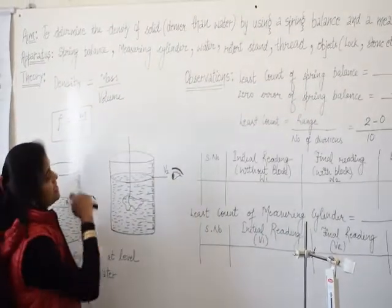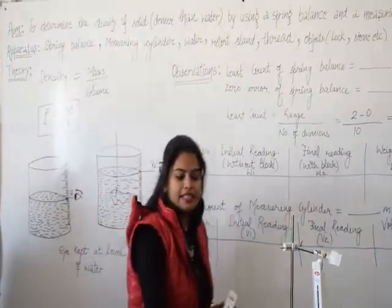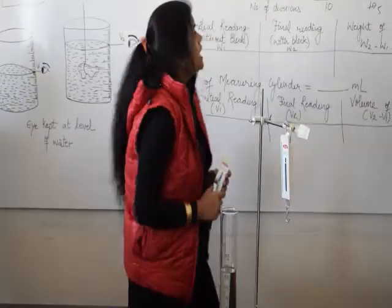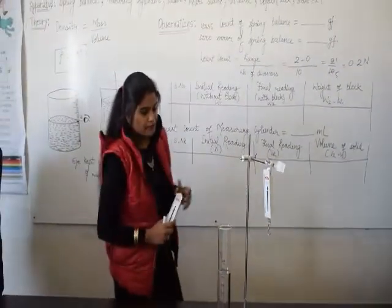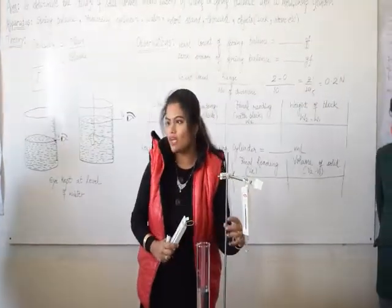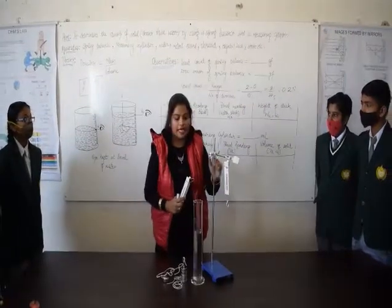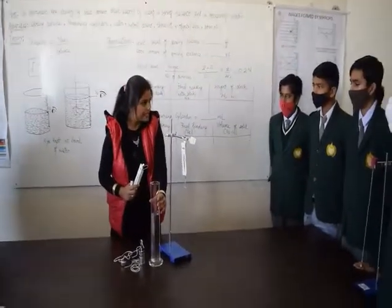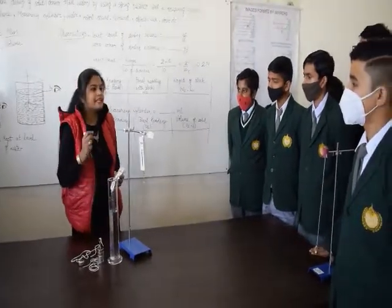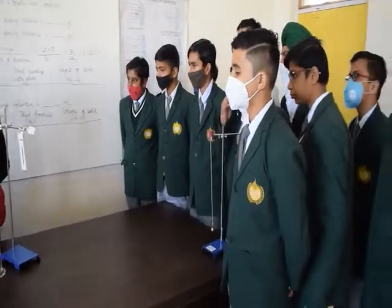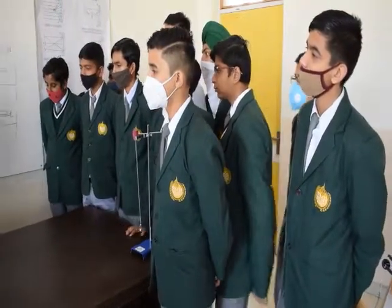We have to take a solid which is denser than water by using a spring balance and this measuring cylinder. What are the apparatuses required for this experiment? One spring balance is there. This is called retort stand with clamp head and boss head. Then we need measuring cylinder and we need some objects, some weights which will be denser than water so that we can immerse that object in that liquid and see the difference and calculate the density of that mass.